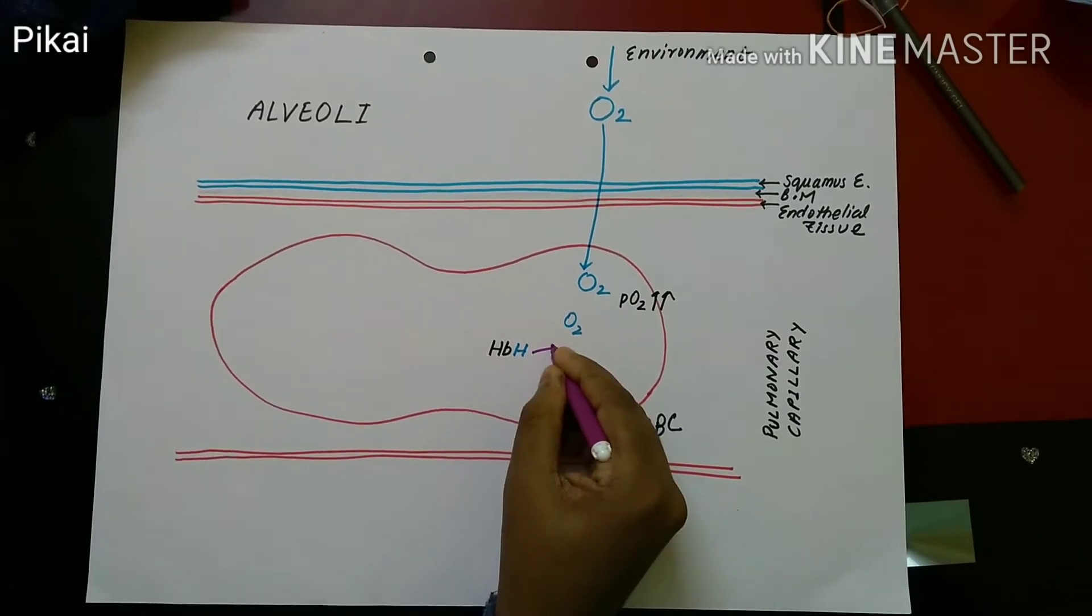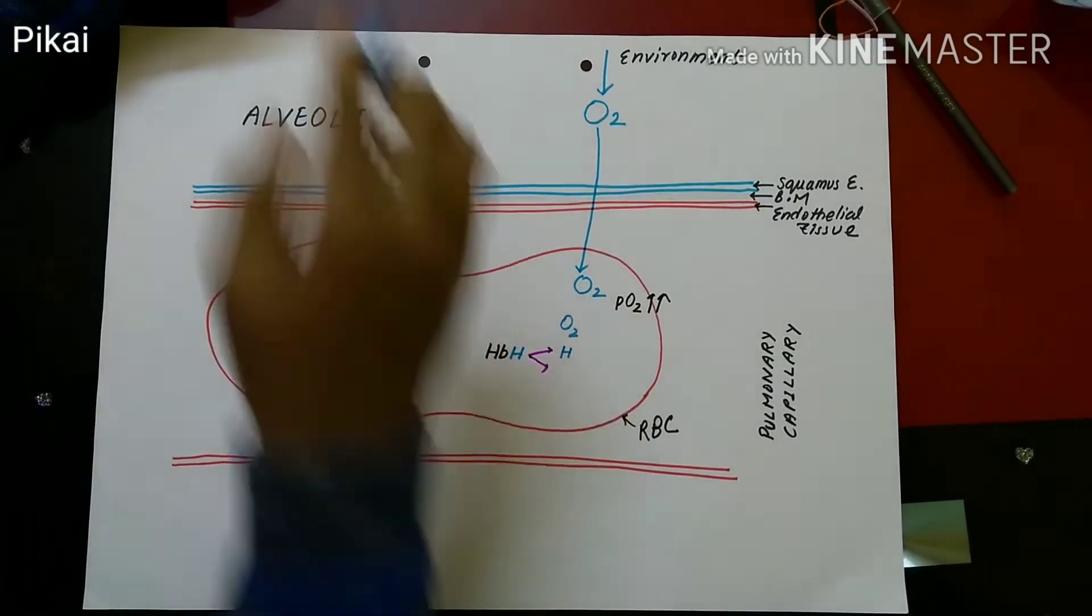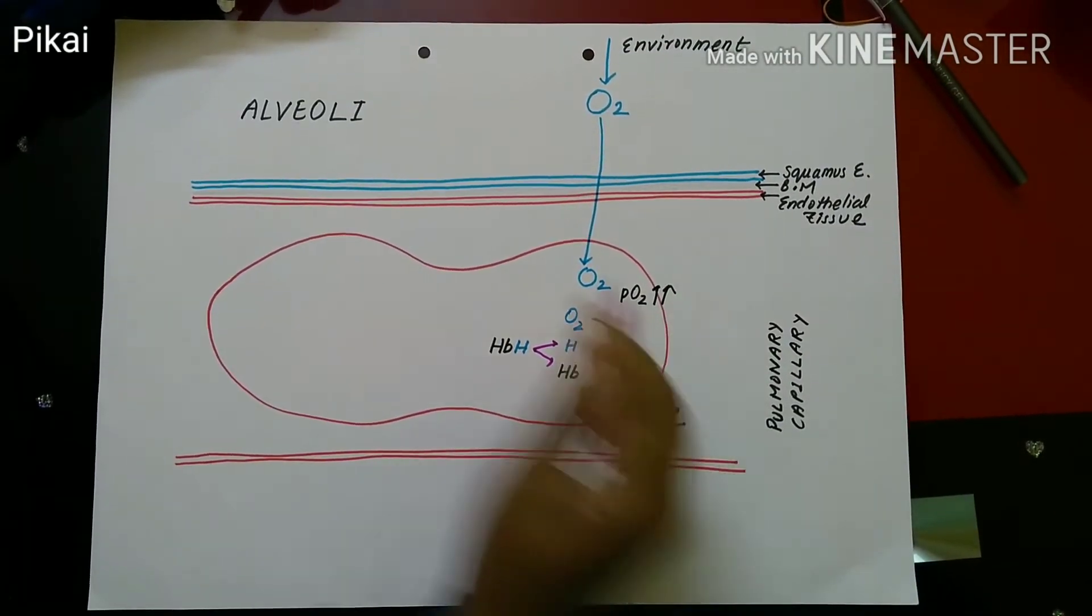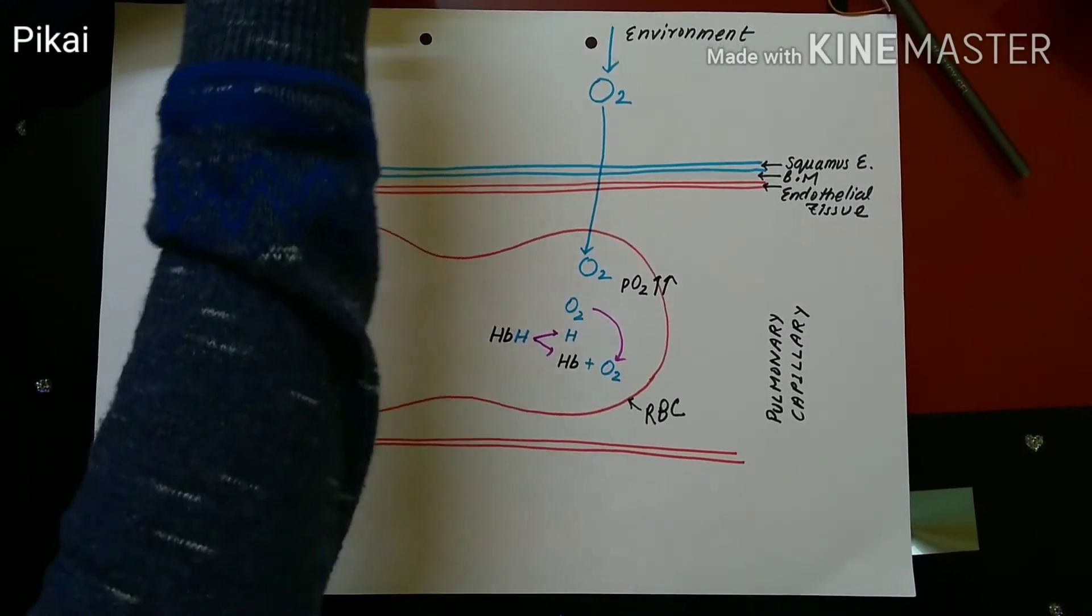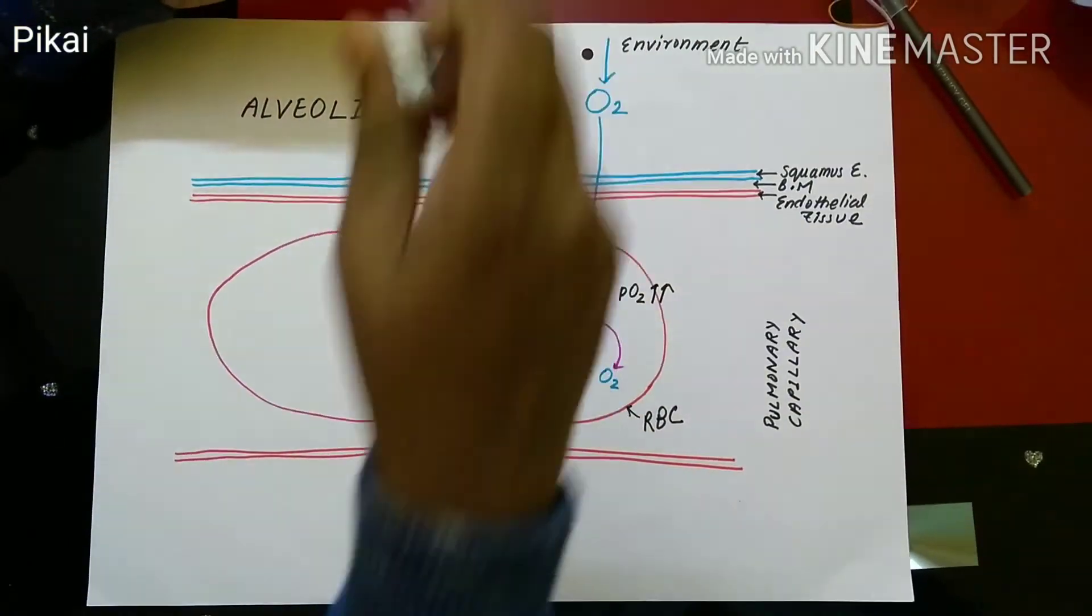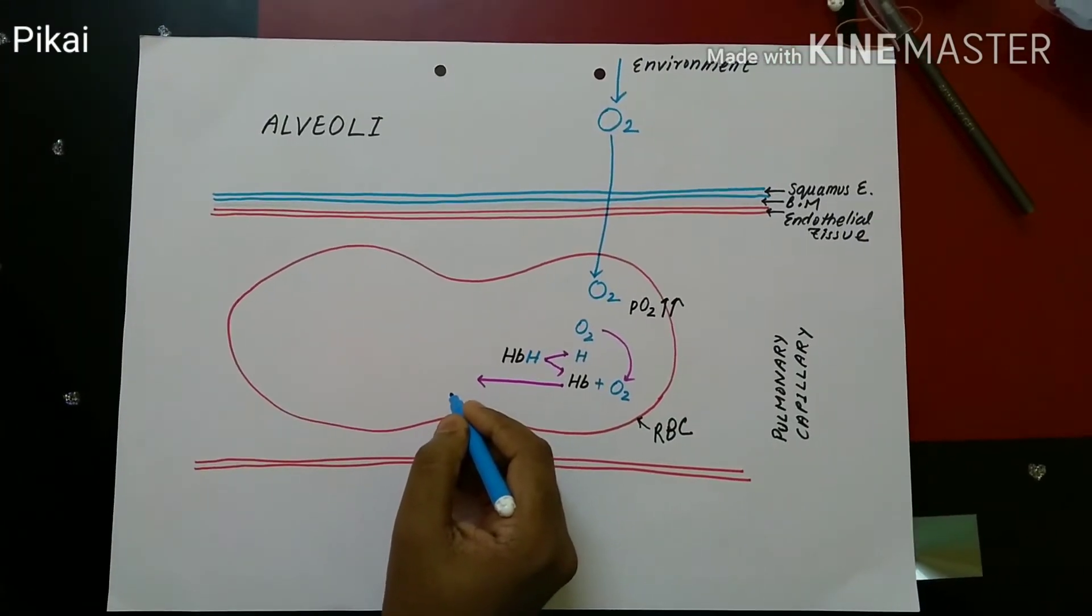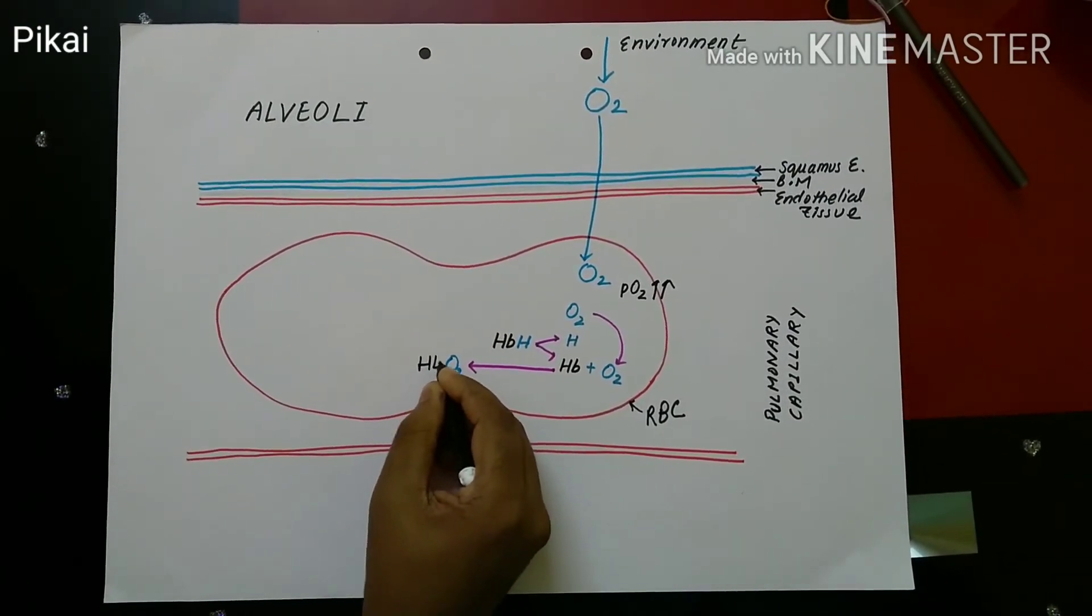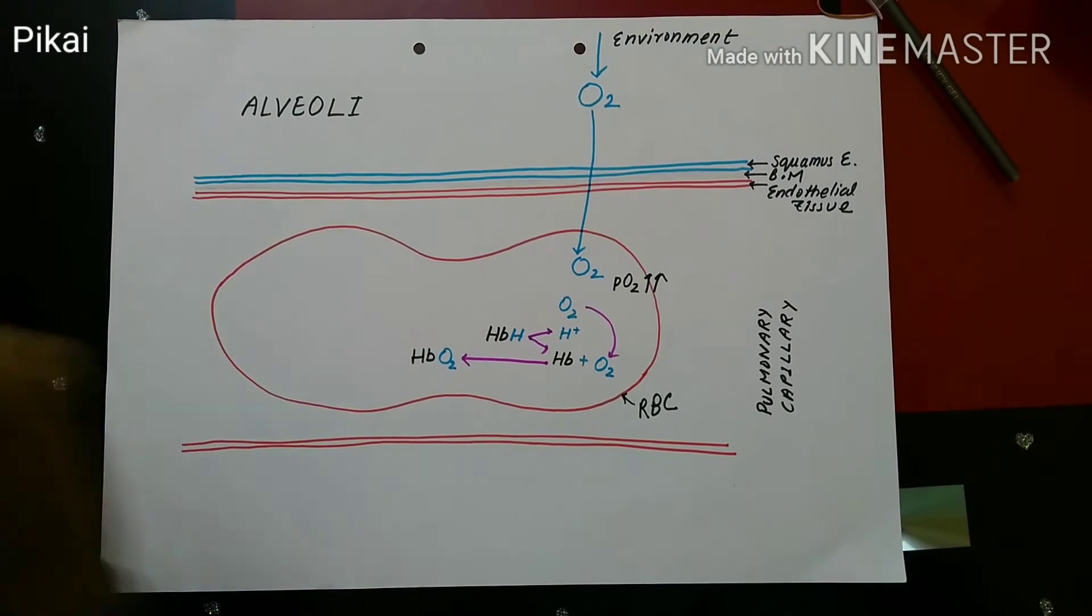So now what happens. The previously formed HHb, that is the hemoglobin with hydrogen ion complex, the HHb which was formed in the chloride shift after the dissociation of oxyhemoglobin, this HHb then dissociates due to the increasing partial pressure of oxygen, that is which is denoted by PO2. So this high amount of oxygen inside the RBC promotes the breakdown of HHb and hemoglobin then again combines with oxygen to form oxyhemoglobin. So HbO2 is formed by a combination of hemoglobin and oxygen and this is known as oxyhemoglobin.